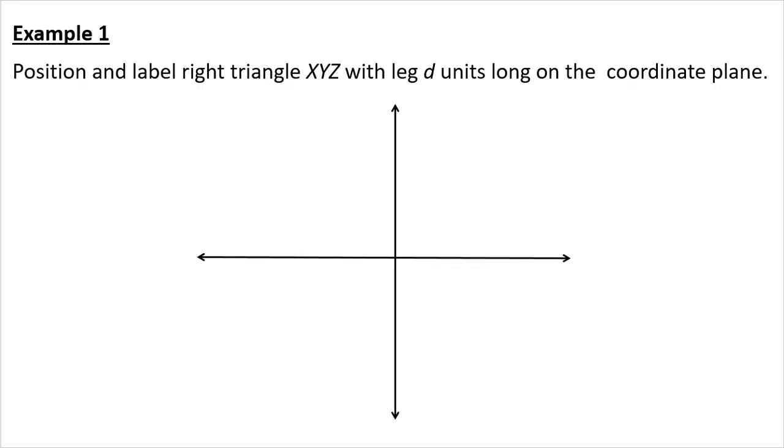Position and label right triangle XYZ with leg d units long on the coordinate plane. I think that this should say right isosceles triangle, so let's change it so that it says that. You want to put your triangle here. That would make no sense because you'd have to find the coordinates of all of these points. What you want to do is put your right angle, since it's a right triangle, put your right angle where we have a right angle already.